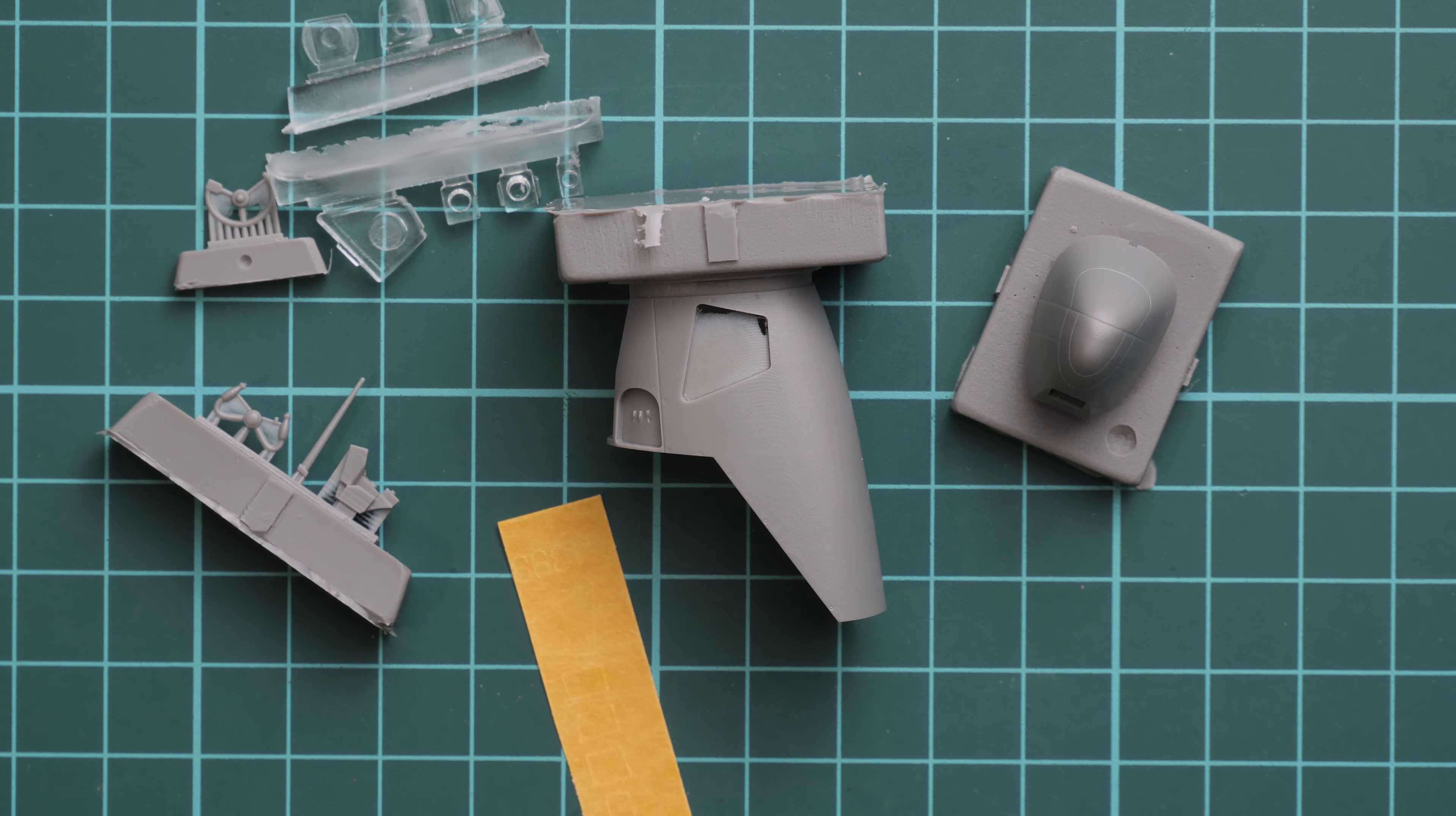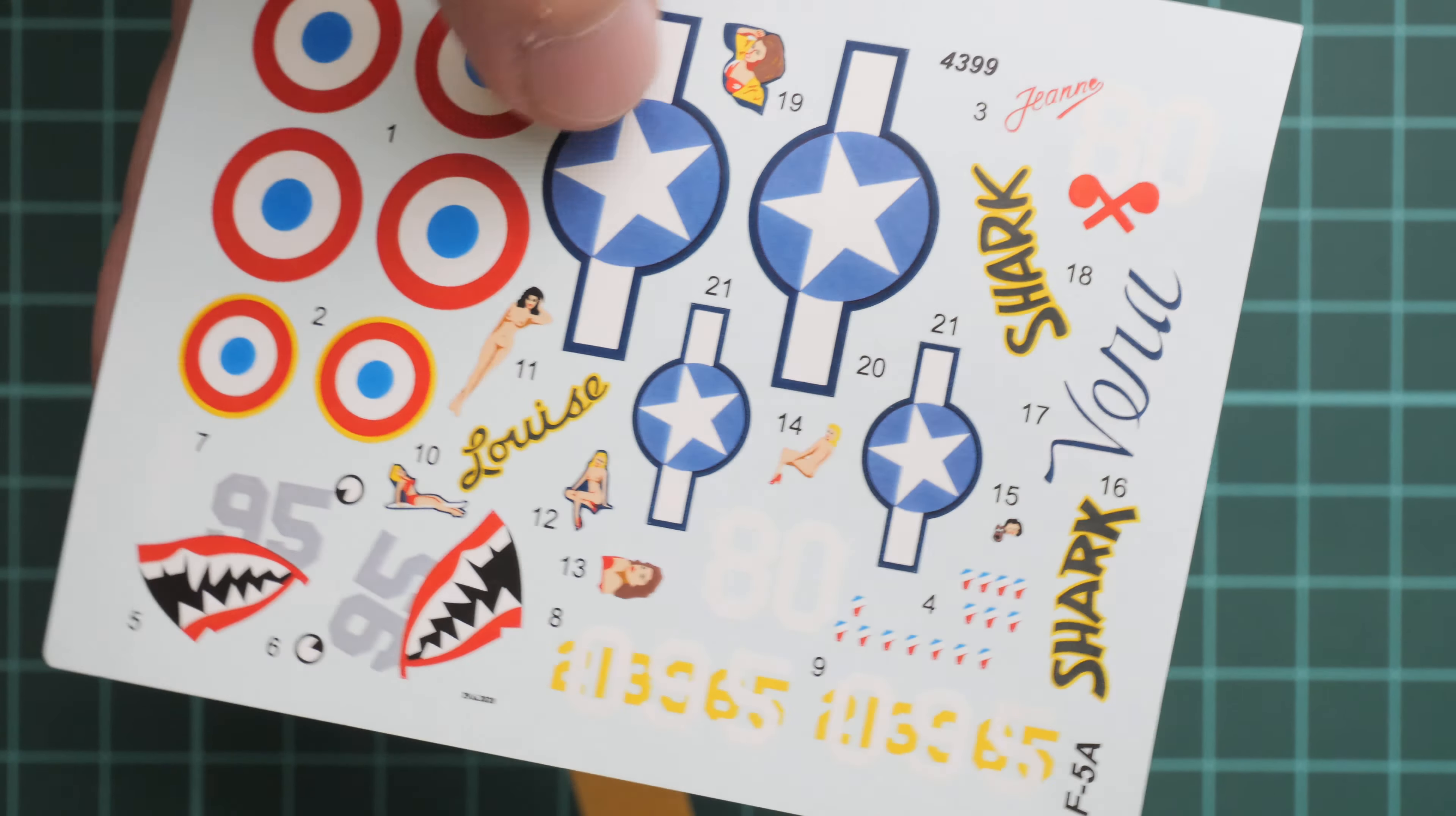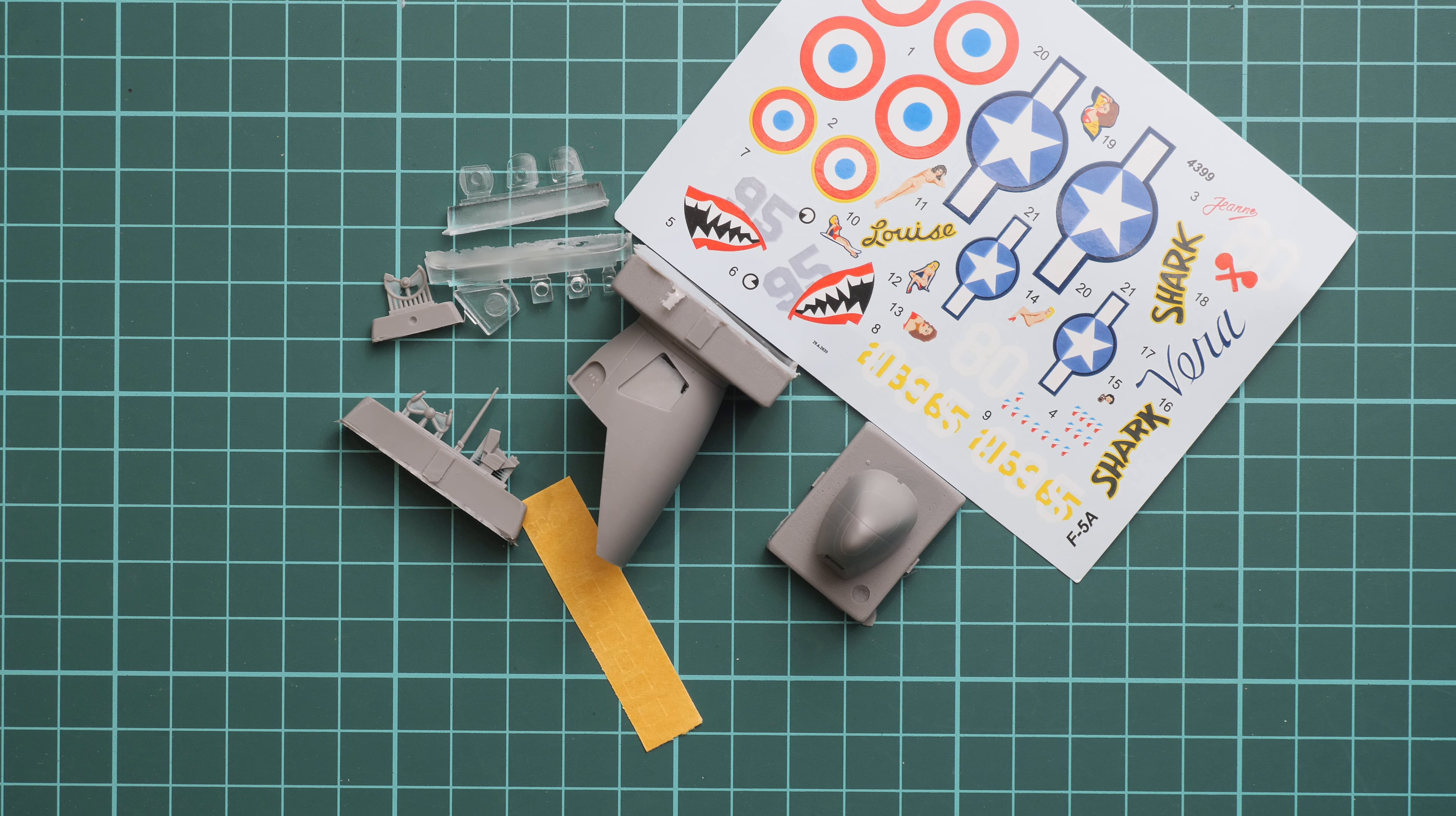Next we go on with decals. Here we have two marking options. There's no mention where they were printed. Obviously you will have to use some stencils from your kit because there are no stencils. But printing quality looks completely fine. I don't see any major issues. This blue is a bit pale, but maybe it should be like this, maybe they were trying to replicate some weathering.